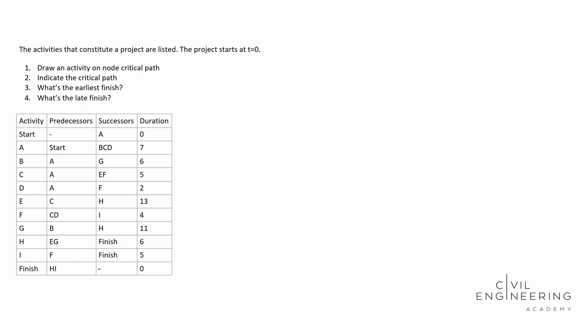Basically, you can go through the options here. It says draw an activity on node, critical path, indicate the critical path. What's the earliest finish, what's the late finish. And then I plan to explain what float is. We're given a table here with the activity, the predecessors, the successors and the duration.